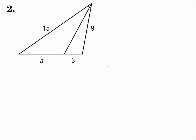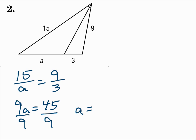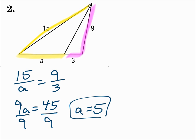Number two. Here we have an angle bisector that cuts the opposite side into two parts. Those parts are proportional to the other two sides. Look at the way the numbers are sitting in the picture. Make your proportion using the same positions: 15 over a equals 9 over 3. Cross multiply and solve — a equals 5. Part a matches side 15, and part 3 matches side 9.